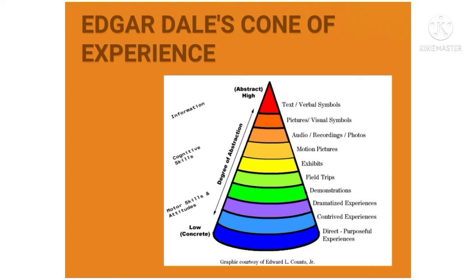The last two levels would be visual symbols and verbal symbols — the most complex and abstract among all the components of the cone of experience. In the visual symbols level, charts, maps, graphs, and diagrams are used for abstract representations. The verbal-symbolic level, on the other hand, does not involve visual representation or clues to meanings. The things involved in this level are mostly words, ideas, principles, formulas, and the likes.